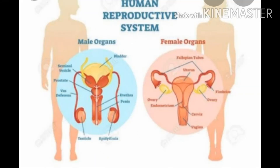Now let's start the next topic: reproduction in humans. The reproductive system of humans is divided into two parts — primary and accessory. The primary reproductive organs are called gonads, and they are organs that produce gametes or sex cells. Male gonads are called testes and they produce sperms, the male gametes. Female gonads are called ovaries and these produce female gametes called eggs. The accessory reproductive organs include all ducts, glands and other structures that help in the transfer of sex cells.